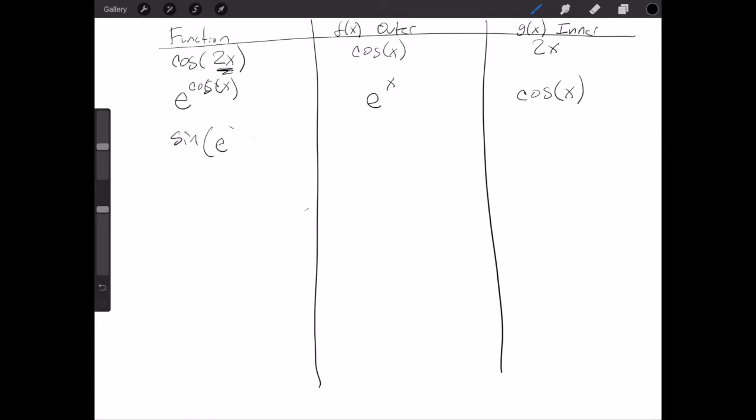We can also do the other way, we could do sine of e to the x. So in this case sine is the outer function of x and e to the x is actually the inner function.